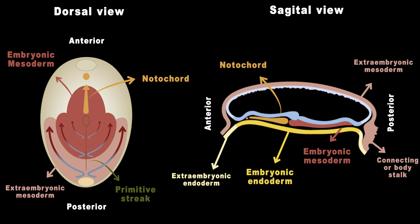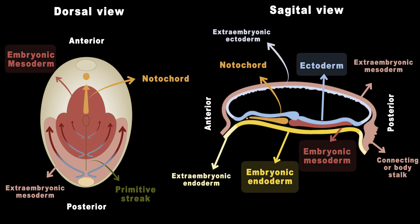The migrating cells from the epiblast also create a new layer called embryonic mesoderm and a tube-like structure alongside the posterior-anterior axis called the notochord. The notochord is a major axial signaling center of the trunk in the early embryo and is important in the formation of many axial structures. The epiblast cells that remain and didn't migrate become ectoderm. These three layers become more specialized and give rise to different tissues and organs in our body, which will be covered extensively in the next video. Thank you for watching.